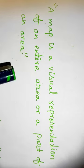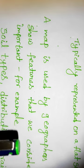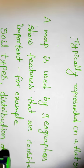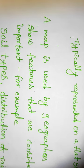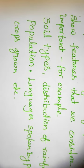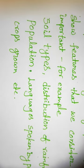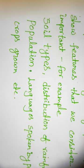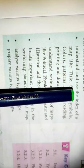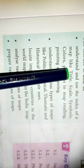What is the meaning of a map? A map is a visual representation of an entire area or a part of an area, typically represented on a flat surface. A map is used geographically to show features that are considered important — for example, soil types, distribution of rainfall, population, languages spoken by people, and crops grown.